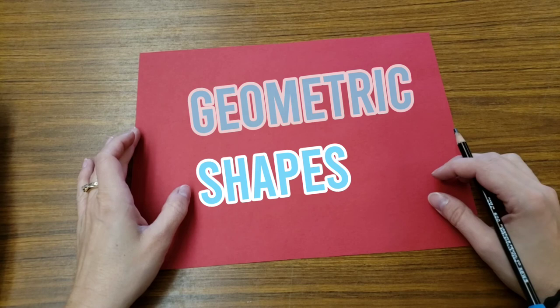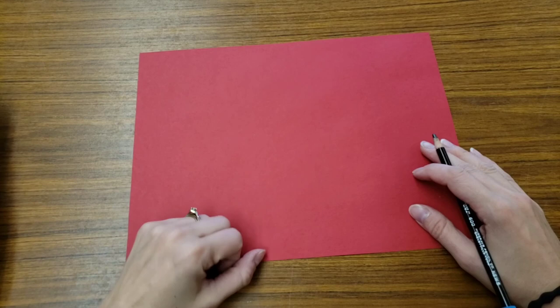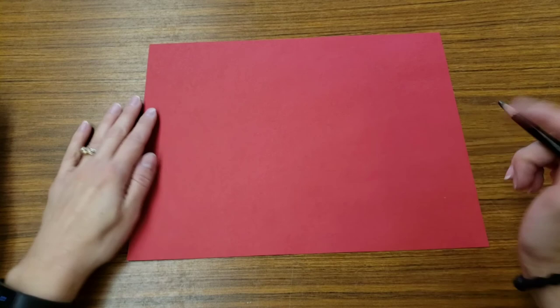Shapes that have names. These are called geometric shapes, things like squares, triangles, circles. For our project we're using squares, triangles, and rectangles.